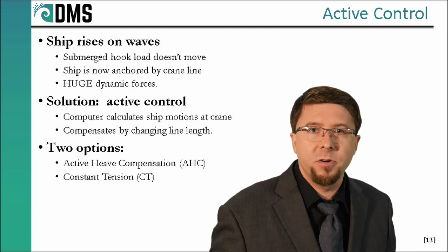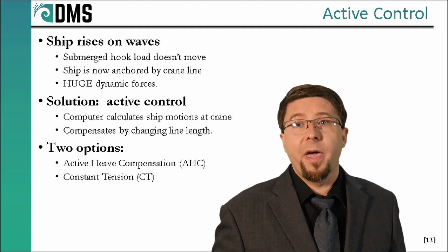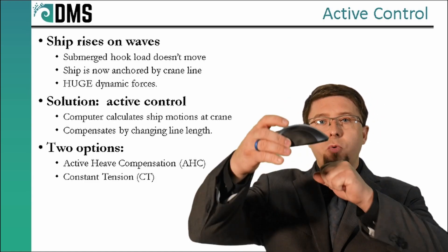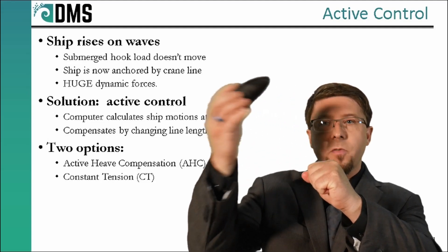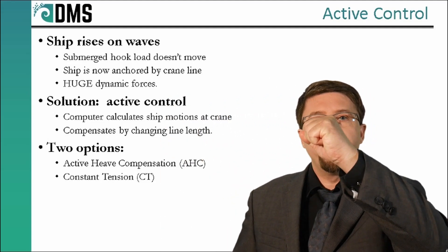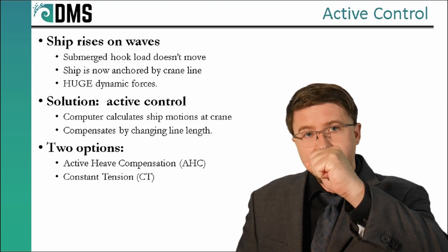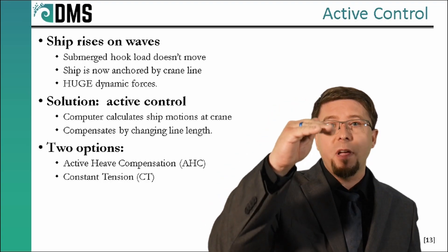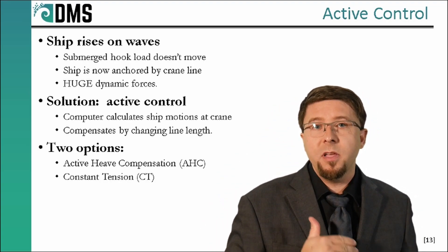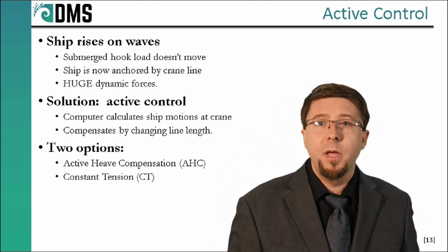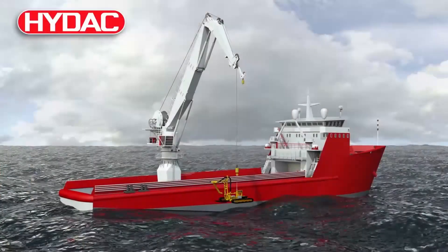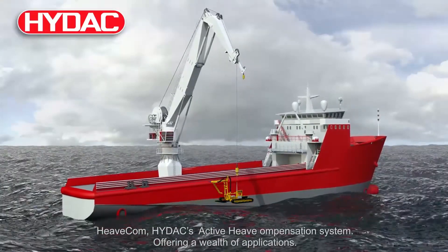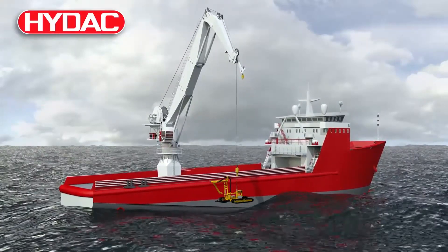To reduce those dynamic forces, we add in something called active control. The basic goal behind active control is to isolate the hook load from ship motions. If the hook load moves slower, the dynamic forces get much smaller. To achieve this, a computer senses the motions of the ship and calculates the resulting vertical motion at the tip of the crane boom. So, we know how that boom is moving.